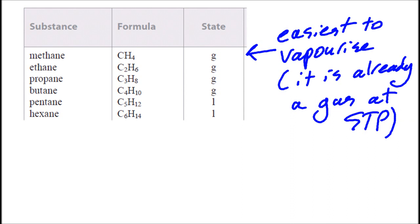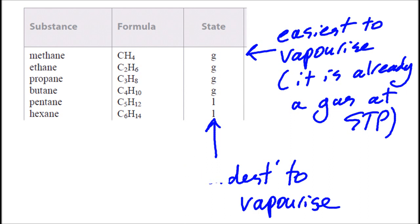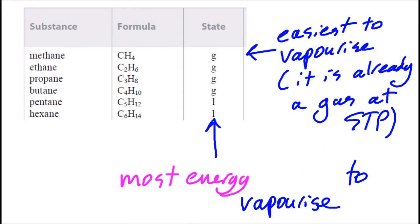A volatile chemical turns into a gas easily. And hexane is the hardest to vaporise. Well, you can't really say hardest and easiest. That's anthropomorphising it. So you could say it's the most energy needed to vaporise it.